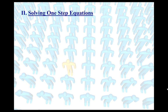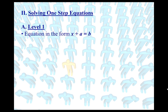So solving one-step equations — level one just meaning a very basic level. Level one equations are written in the form x plus a equals b. Now, a and b can be integers. So an example of a level one equation would be x minus 7 is equal to 4 — that would be a level one one-step equation. Or it could be x plus 8 equals 3. Integer values means you can be a positive or a negative whole number.